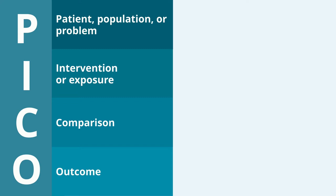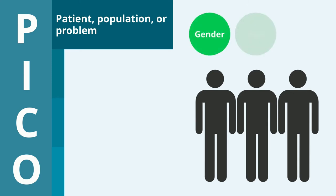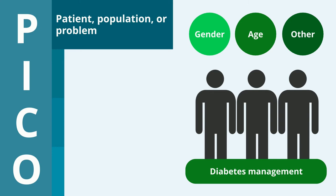To use PICO, you have to answer questions about each of these elements. Here's what that looks like. Patient, population, or problem? What are the characteristics of the patient or population? For example, gender, age, or other demographics. What is the situation or disease you're interested in? For example, diabetes management.